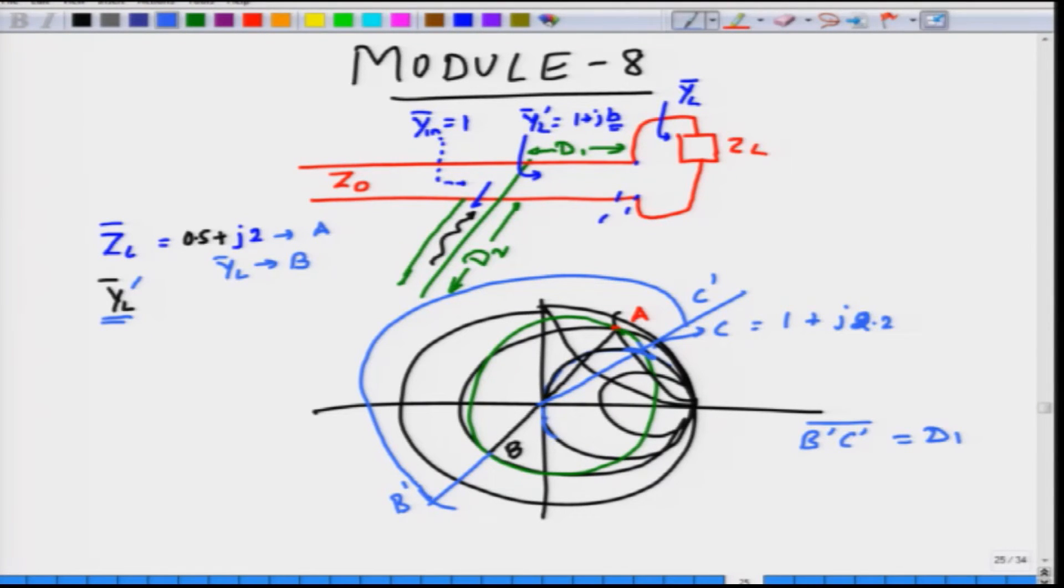Now, you could observe an interesting thing, as you keep moving along this green line, you will actually land up at one additional cross section or additional intersection which we can call it as D and then D prime, the arc length B prime D prime, is also another solution which we will call as D1 prime for the stub position. You could choose either to place a stub at the arc length B prime C prime, where the impedance is of the nature 1 plus J, some positive value of B or you could place the stub at a length D1 prime, where the admittance YL prime is actually of the form 1 minus J something. Both are actually possible.